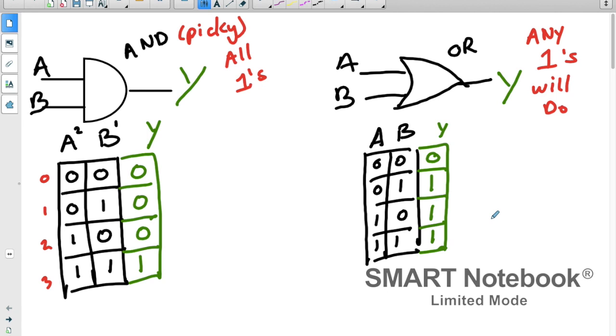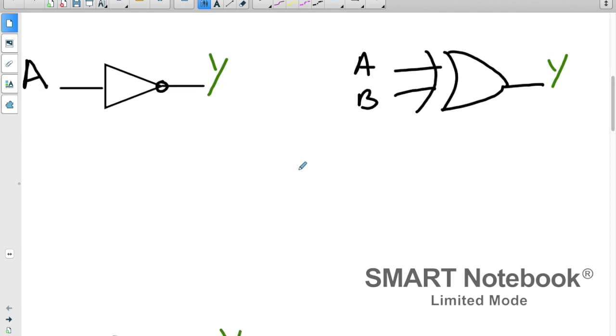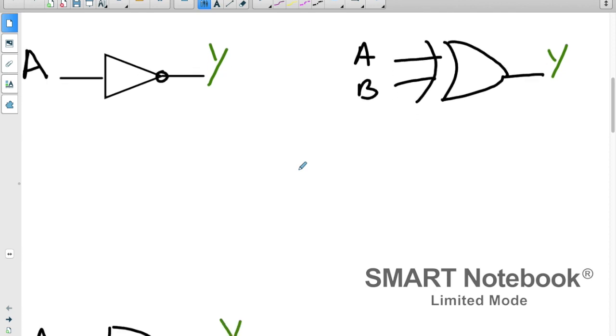Any questions on those? Pretty easy. So any questions on these two? These are the most common ones, the AND gate and the OR gate. We'll do a couple more. On page eight, or not page eight, problem eight. You're going to do this one first.